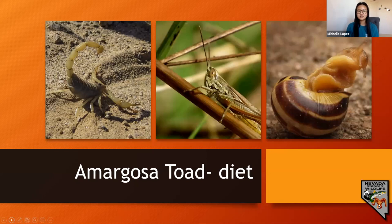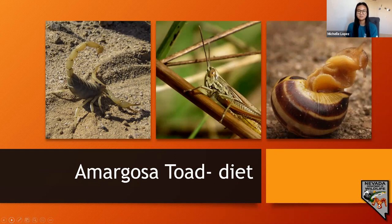These toads are nocturnal foragers, feeding on invertebrates such as spiders, insects, snails, and even scorpions during the night. They occasionally visit areas with artificial light because that light draws in insects. The Amargosa toad uses its sticky tongue to grab prey in a sit-and-wait predator strategy.